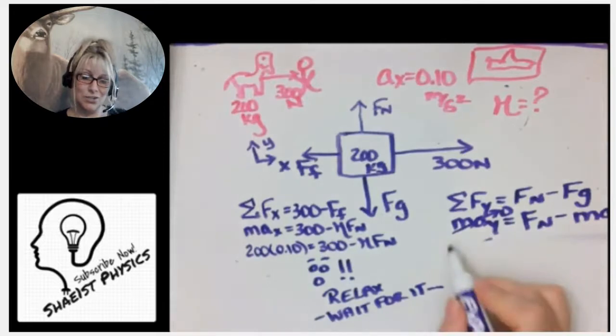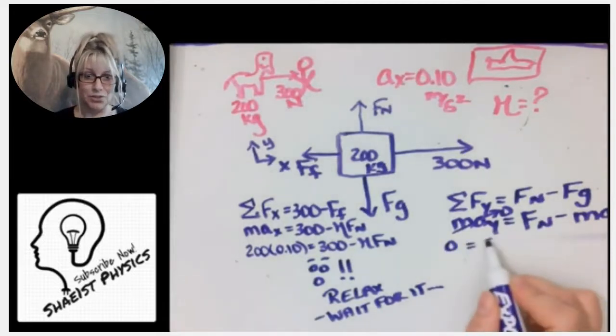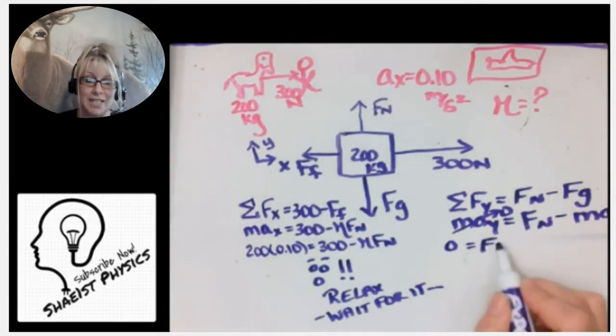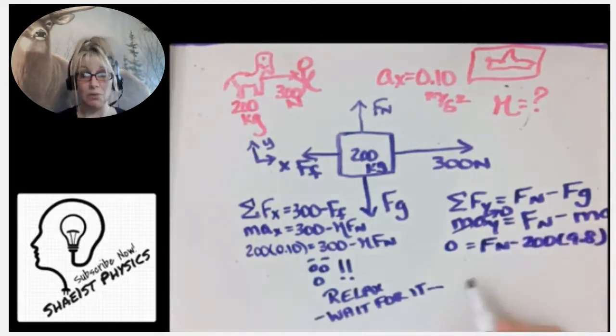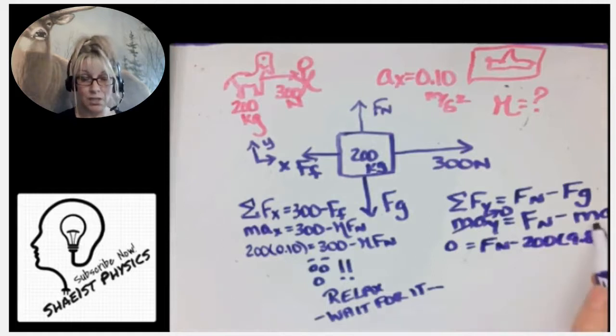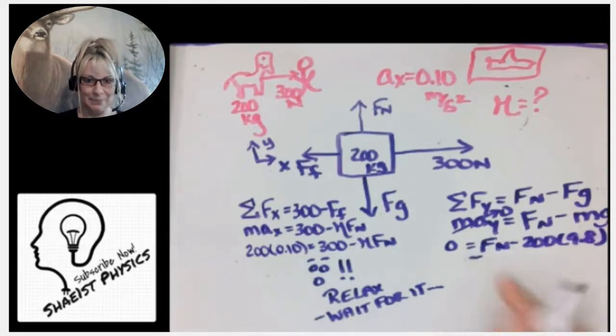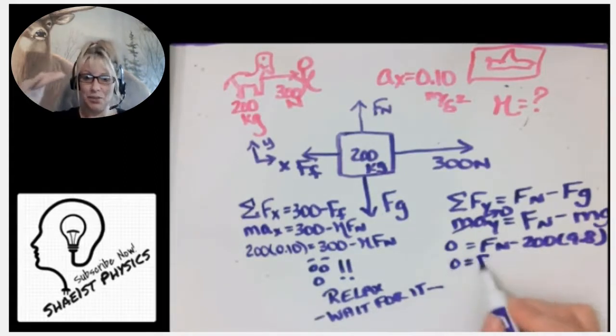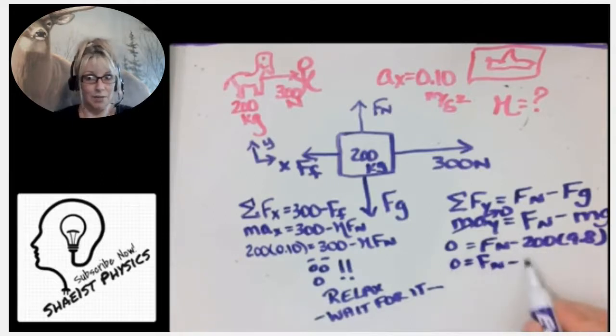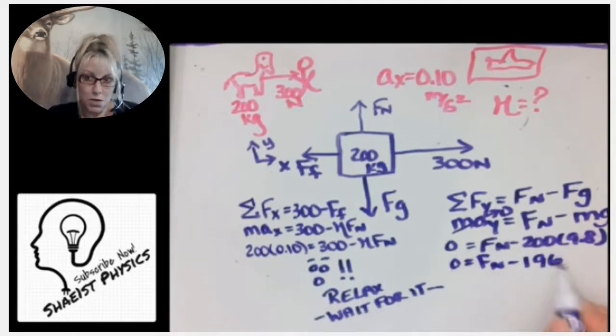On the right hand side, let's just rewrite that so we don't fall off the screen. On the right hand side we have our normal force minus the mass times g. Now remember, g is just the magnitude of our acceleration due to gravity, which we're going to estimate as 9.8 today. Now we're just going to rewrite this again and simplify it. Every single line just gets simpler and simpler and simpler.